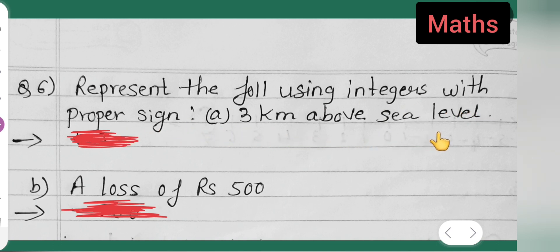First one is 3 km above sea level. 3 km above sea level means we have to use a positive sign. So, basically it will be plus 3.